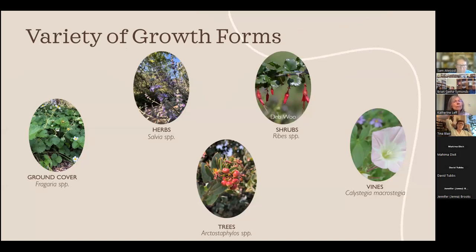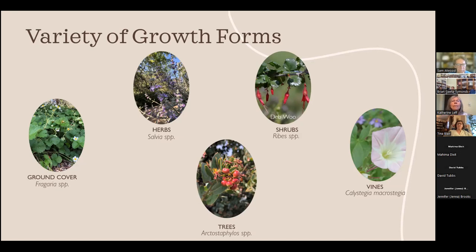Native plants also have a variety of growth forms. We have ground covers — including a native species of strawberry that makes tiny but tasty fruits. We have herbs like salvia, which are sages important to indigenous groups in the area. We also have shrubs like ribes — gooseberries and currants, including golden currants, which are a personal favorite.